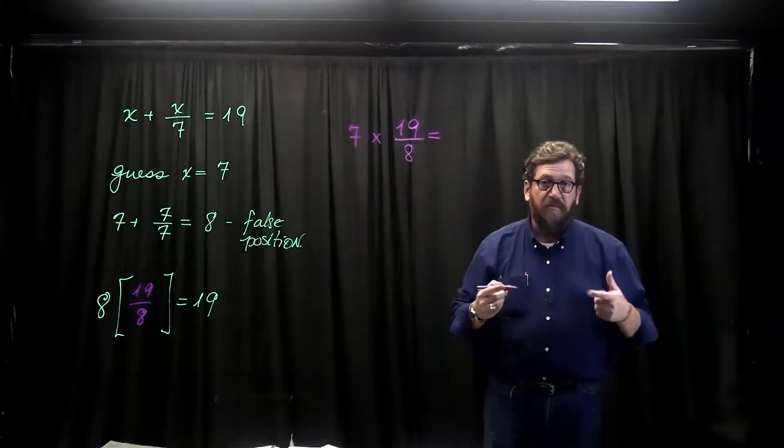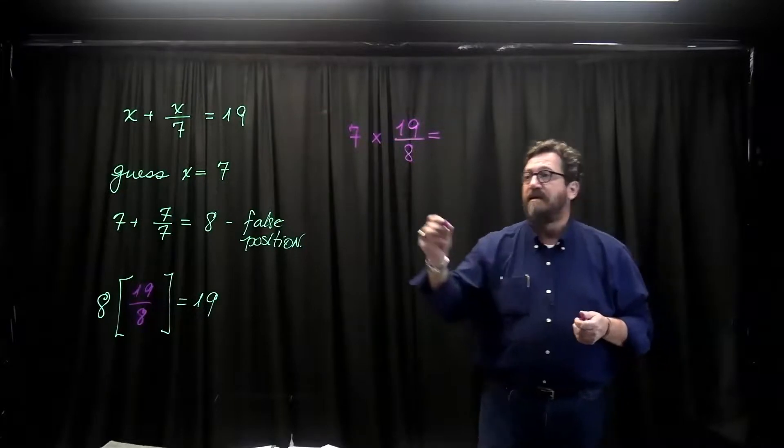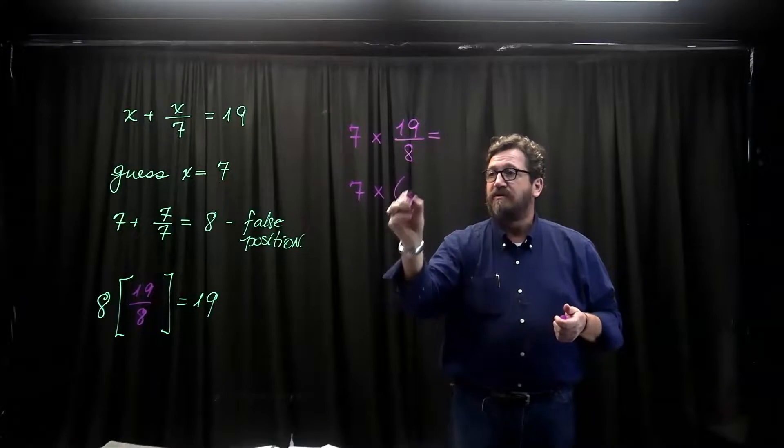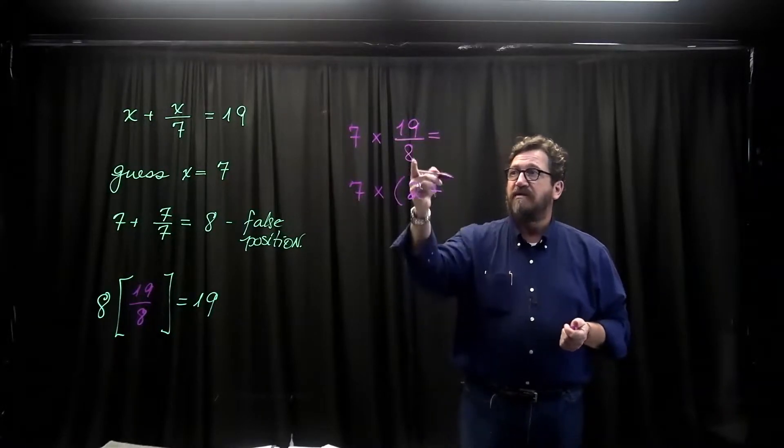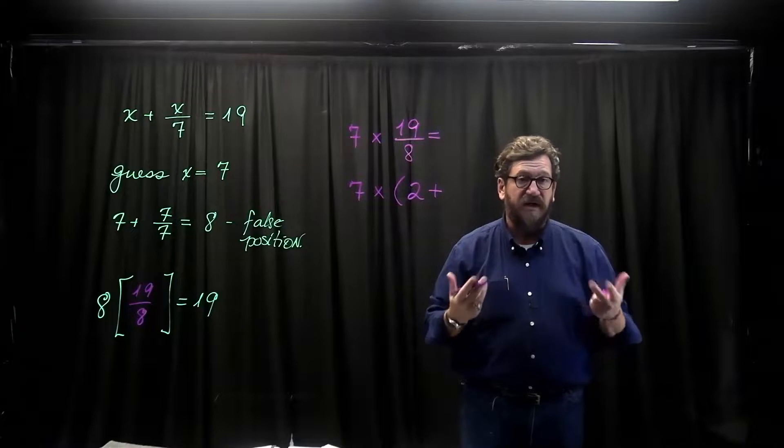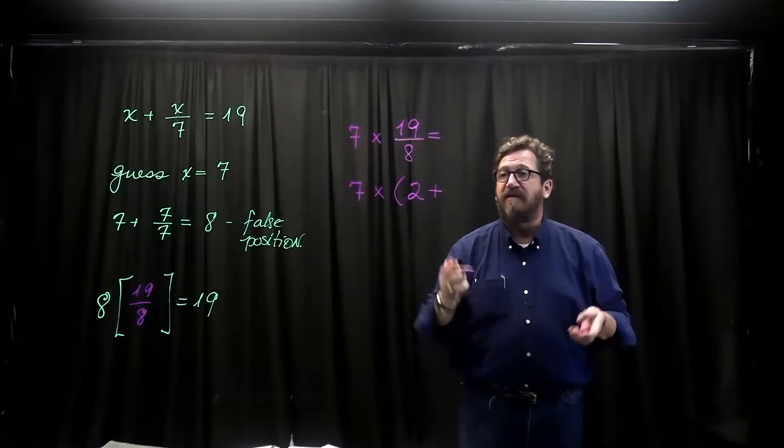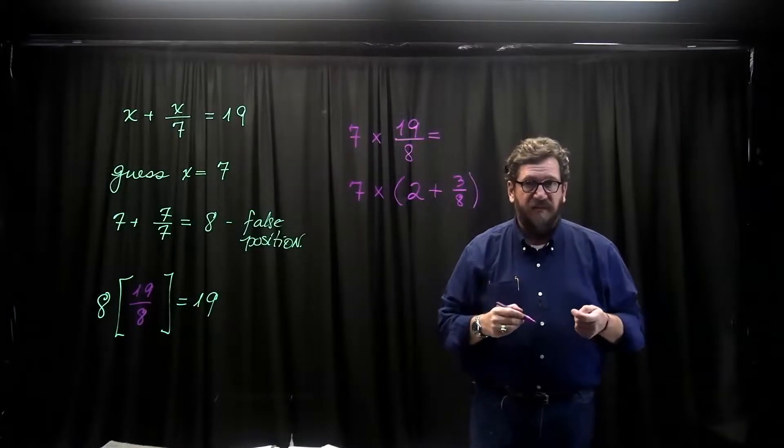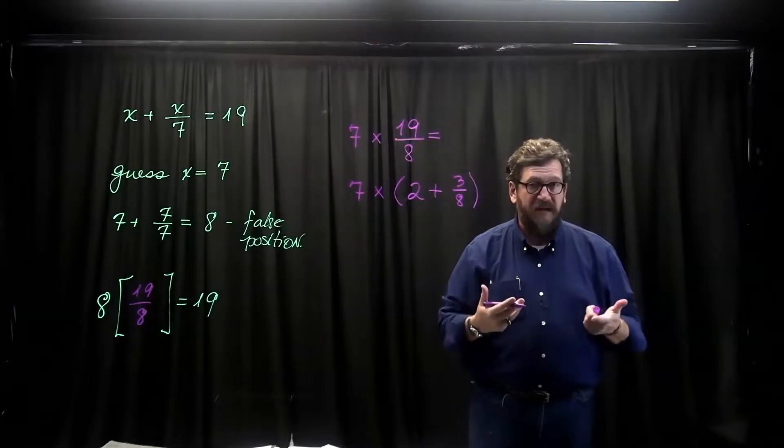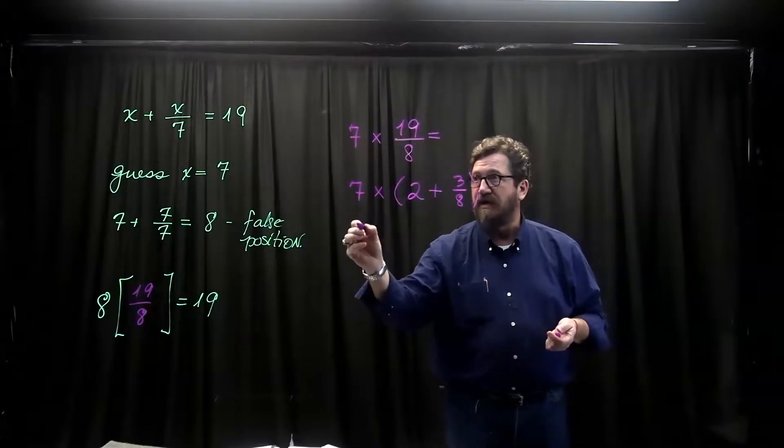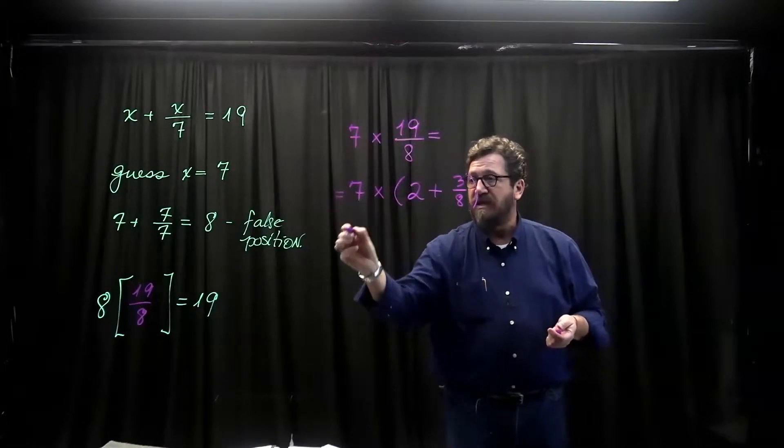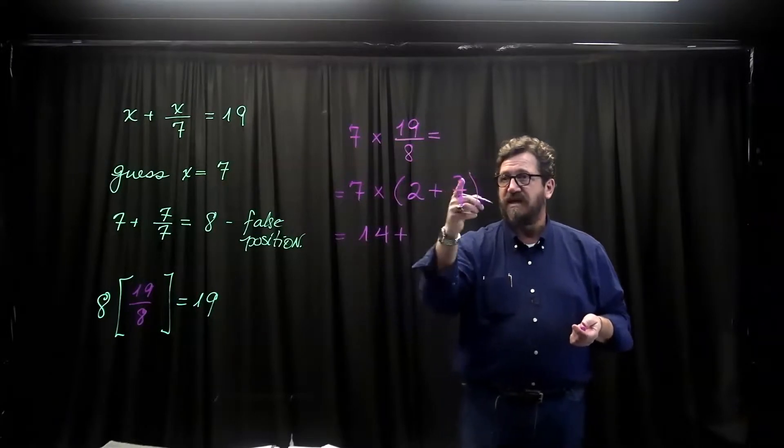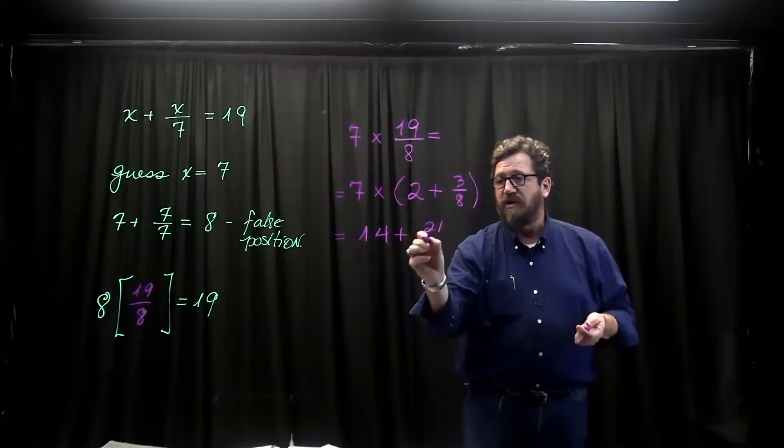Now permit me. I'm going to make my problem a bit easier. 7 times 2 plus, I know 8 goes into 19 twice, that got rid of 16. So I have 3 eighths. And I'm going to leave it as 3 eighths. I could if I wanted to expand that out. Well I'm not going to right now. So now I'm going to get an amount 7 times 2 is 14 plus 7 times 3, 21 eighths.